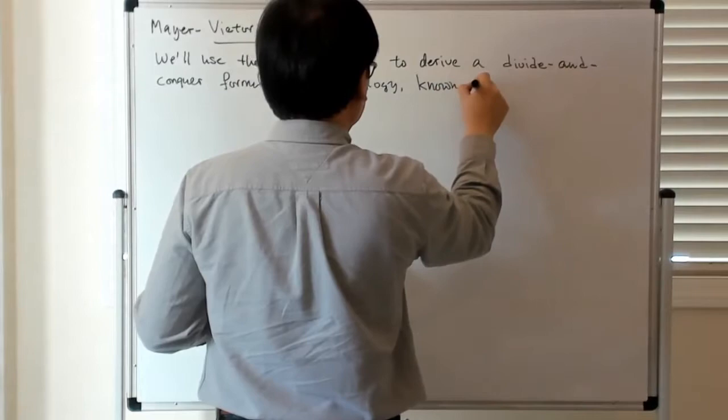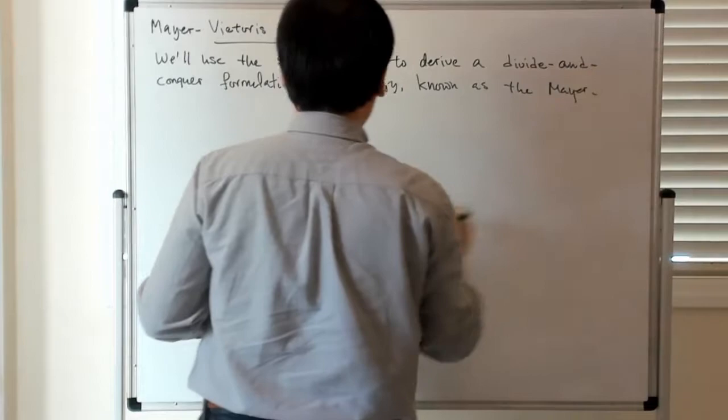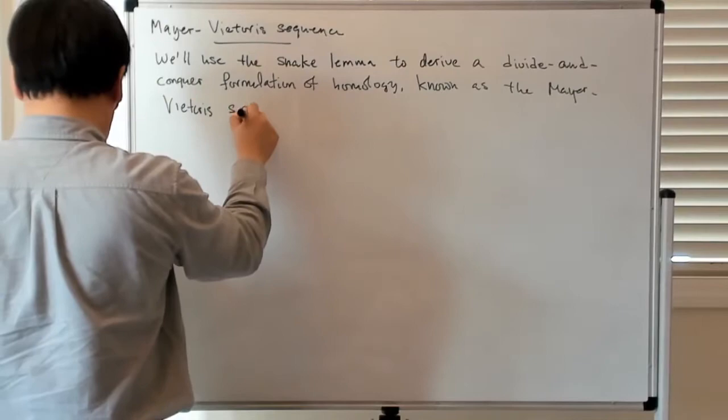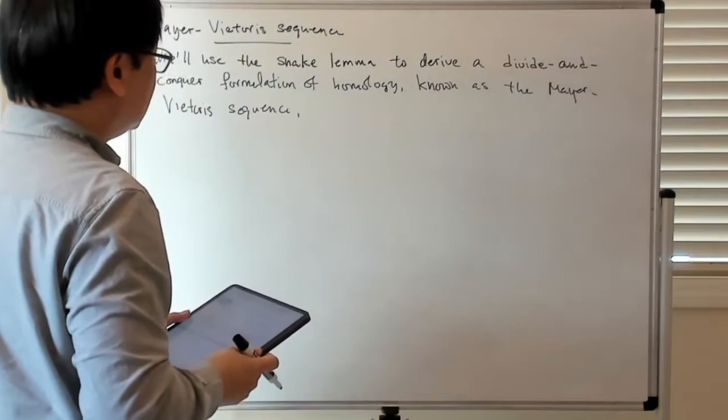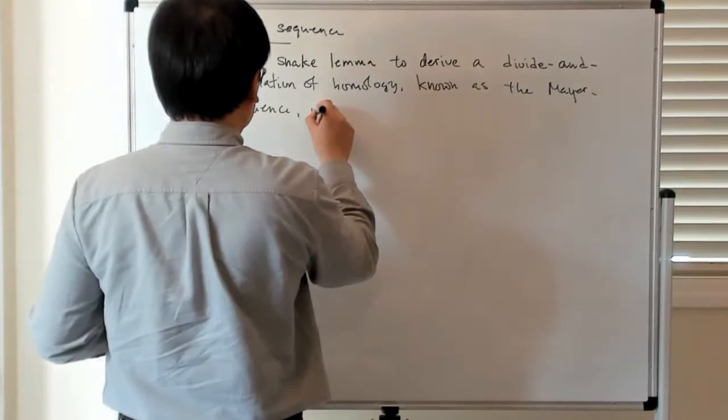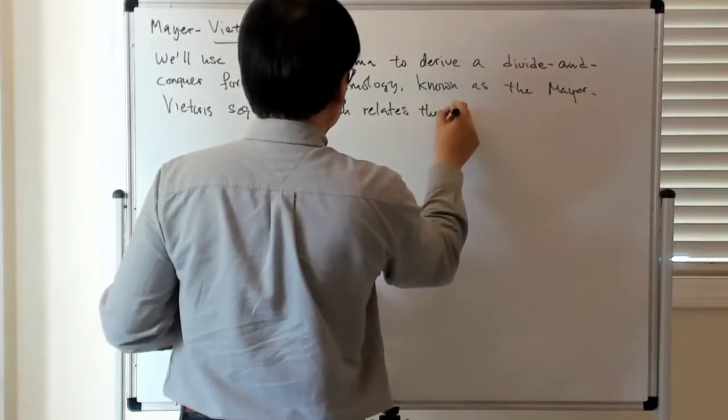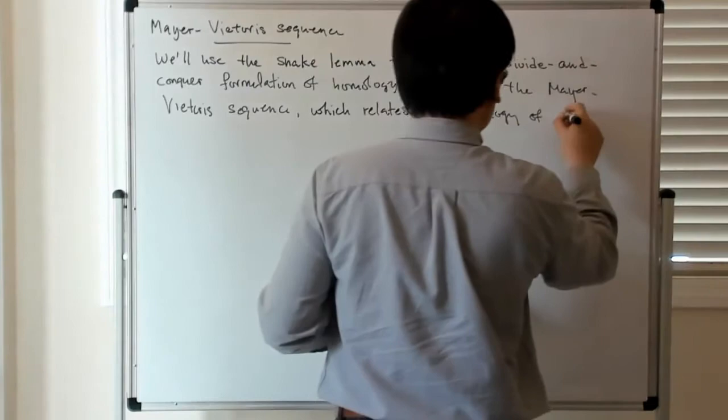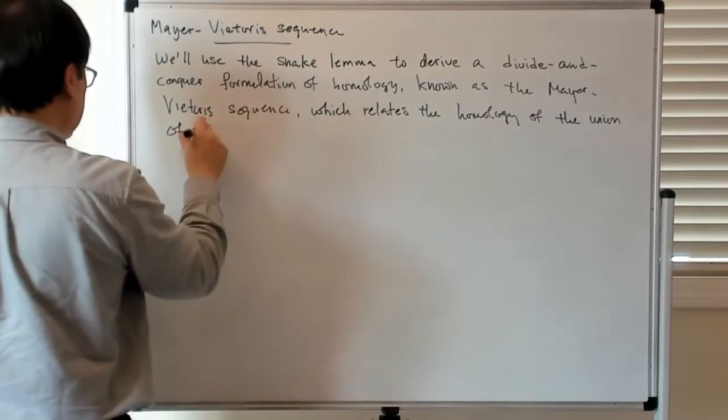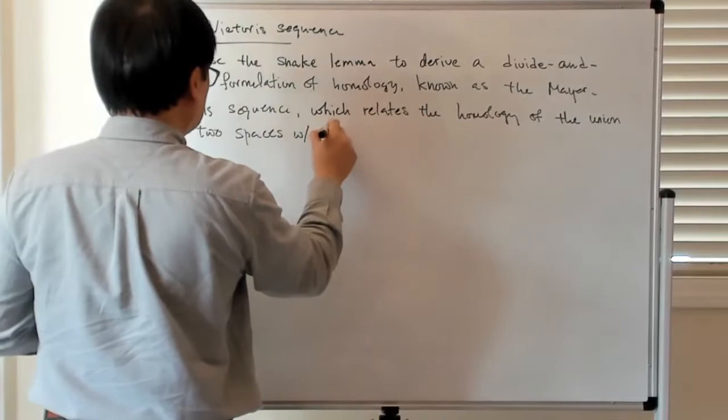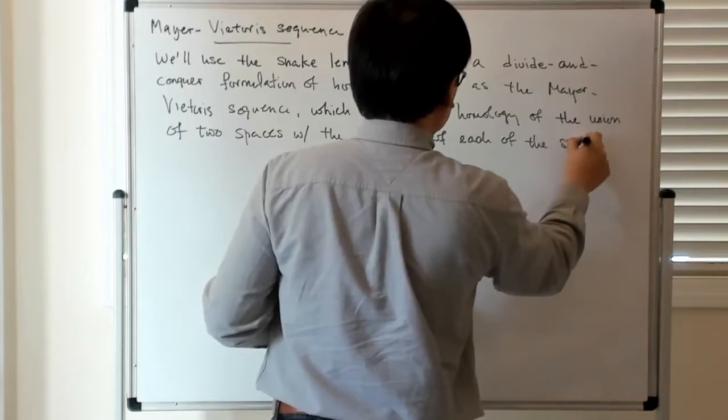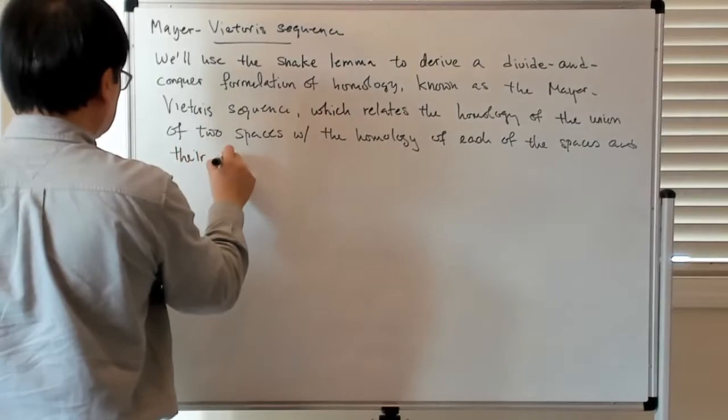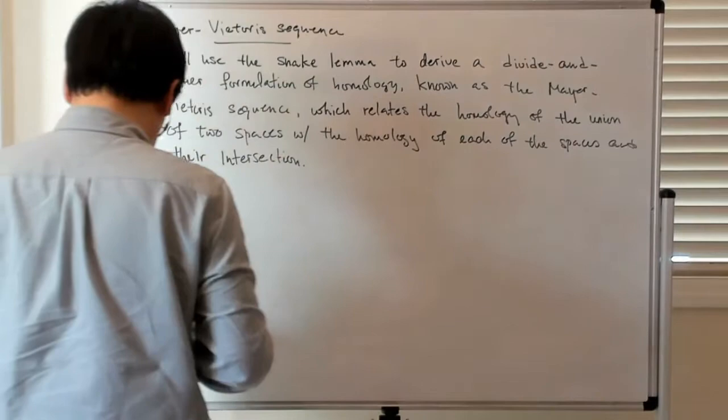Known as the Mayer-Vietoris sequence. And essentially what it does is that it relates the homology of the union of two sets or two spaces with the homology of the individual spaces and the intersection of each of the spaces.